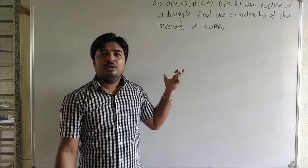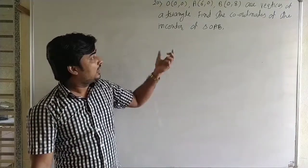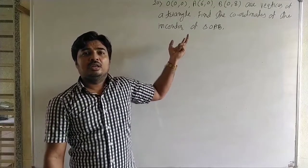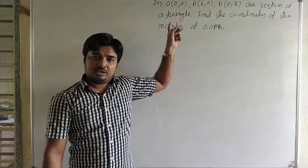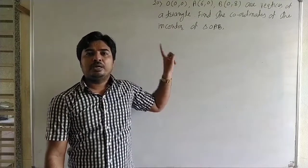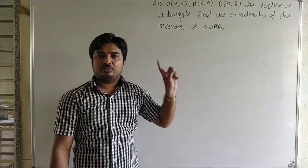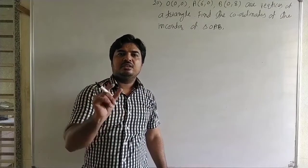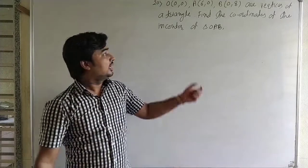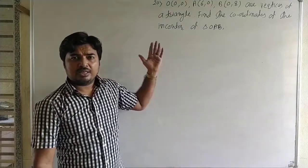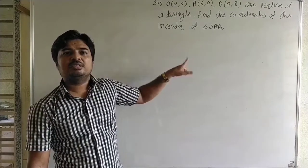In the previous example we saw the equation of one angle bisector. Now here we want to find any two angle bisectors of the triangle, get their equations, and then find the point of intersection — that is the incenter. The incenter is the point of intersection of angle bisectors. Now we find the angle bisectors. Observe the vertices: O is the origin (0,0), A is (6,0) on the x-axis, and B is (0,8) on the y-axis. This is a right-angled triangle at the origin.